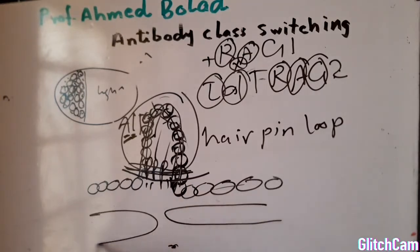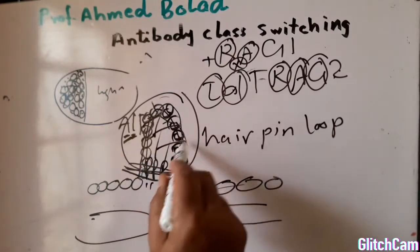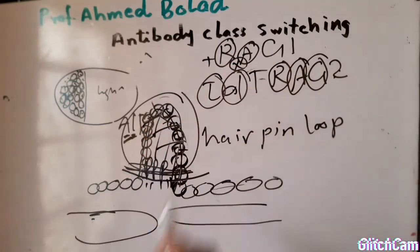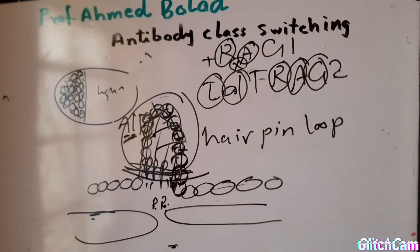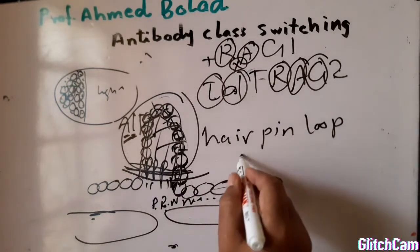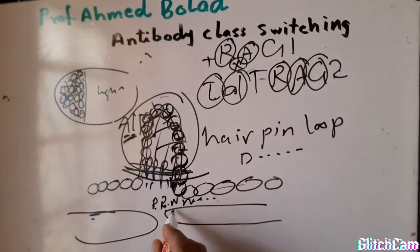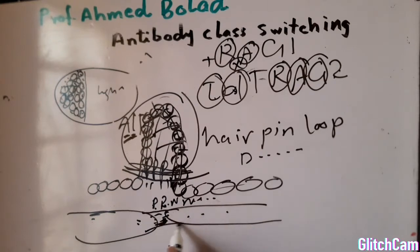Following removal of the hairpin with RAG1 and RAG2, there is a gap. RAG1 and RAG2 add P-nucleotides to this area. Then an enzyme known as terminal deoxynucleotide transferase adds N-nucleotides. This is followed by DNA repair enzymes that repair this area, and these two parts of the RNA anneal together to form a single strand.